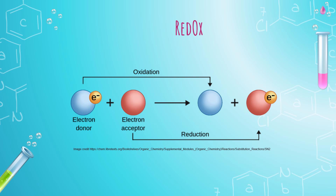As promised, first we're going to review what redox even is — reduction and oxidation reactions. Reduction is all about the gaining of electrons or protons, whereas oxidation is the loss of electrons or protons. I like 'LEO says GER' as my mnemonic device, but you can also use 'OIL RIG': oxidation is losing and reduction is gaining electrons and protons.